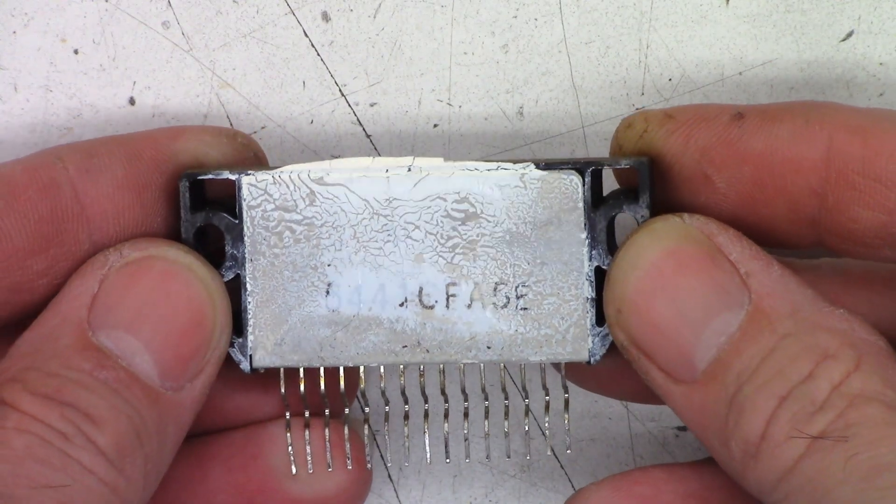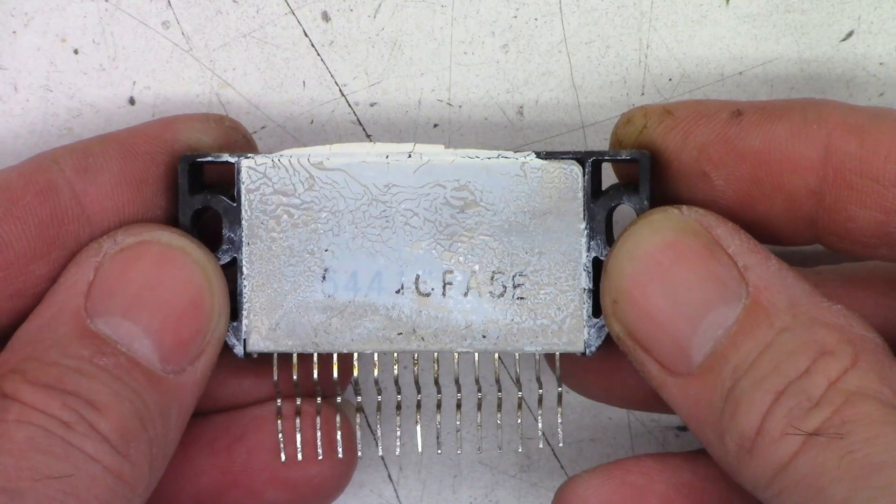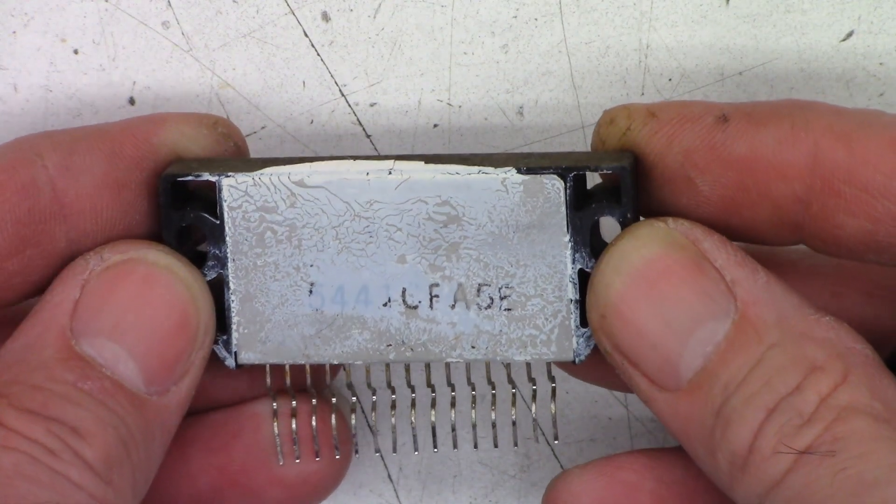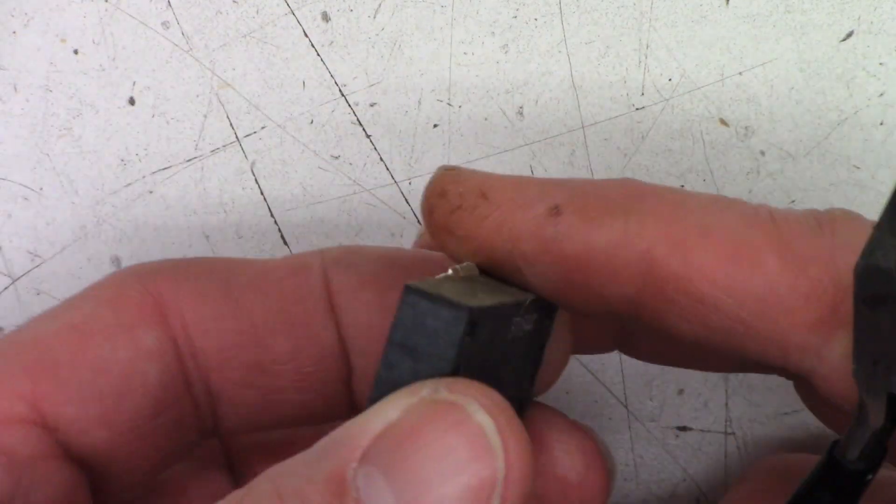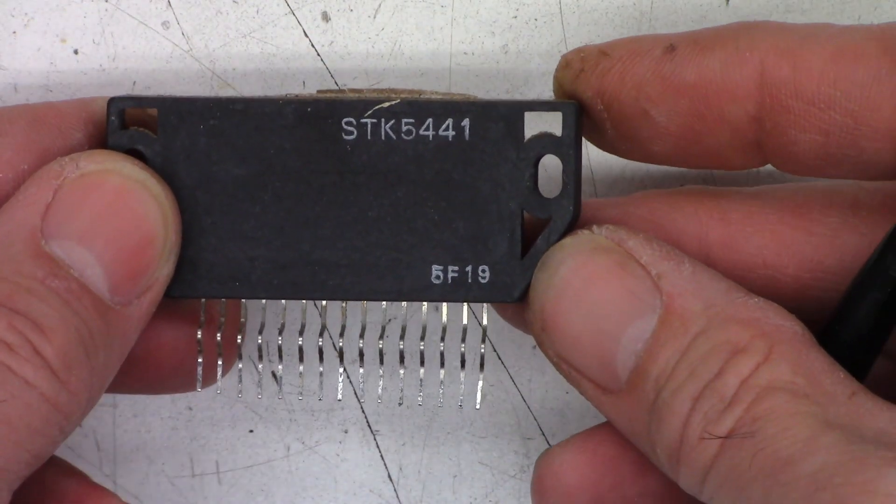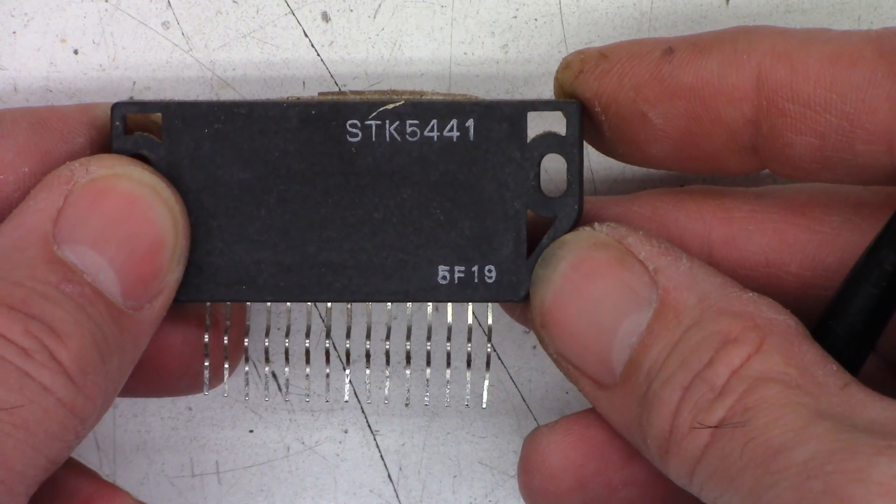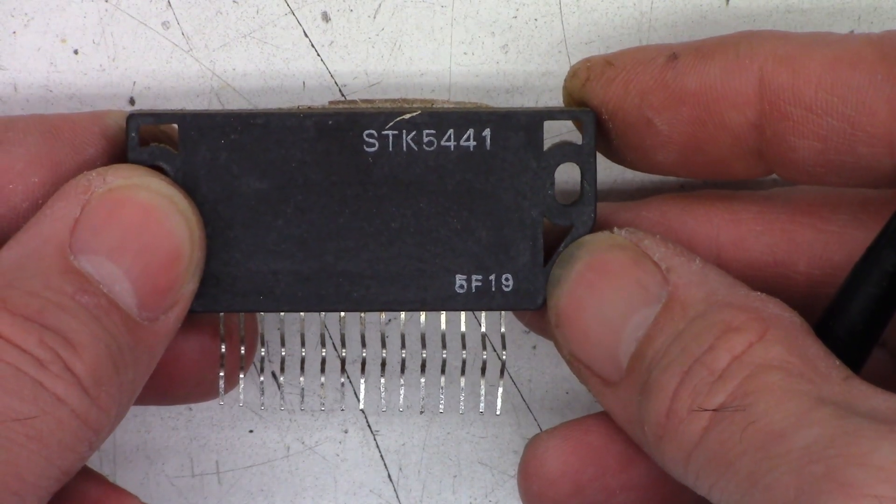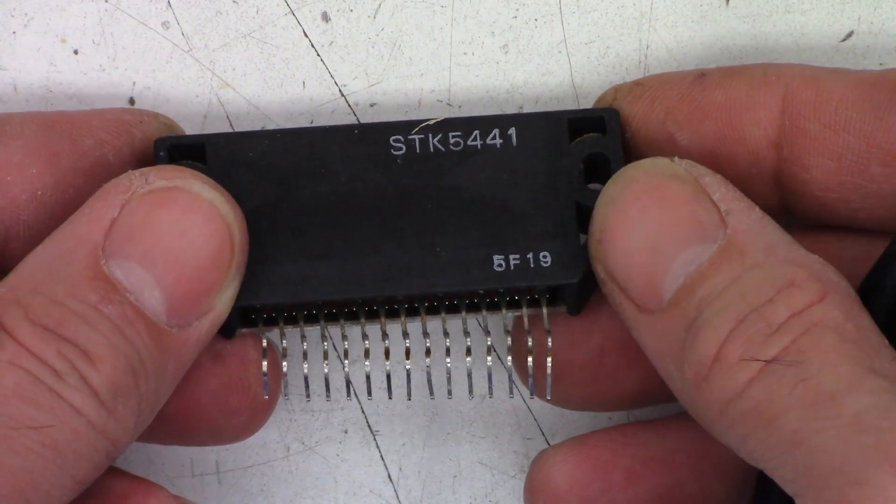As you can see, the date code or the code on the back is 5441CFA5E, possibly. Hard to tell. And the date code on the front is 5F19. I do believe this is probably the original STK chip from manufacture in 1985 in the Sony Betamax.